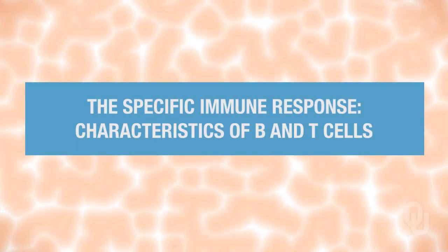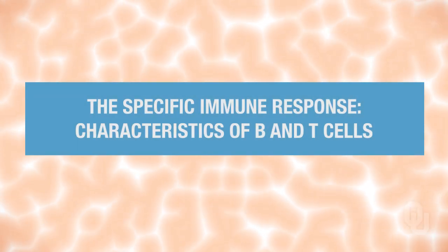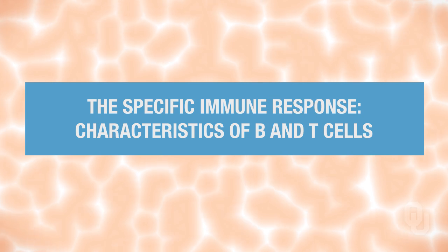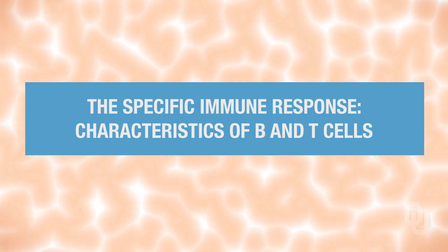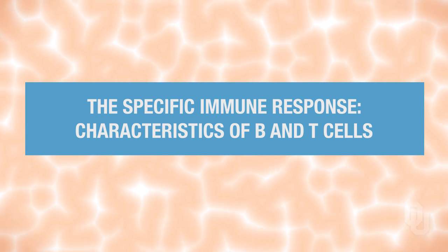This is Part 3 of 6 for Chapter 23, The Immune System. In this part, we're going to look at characteristics of the B and T cells.